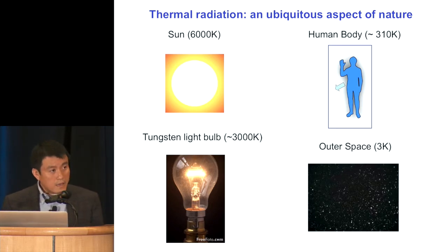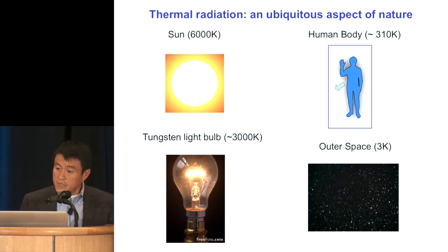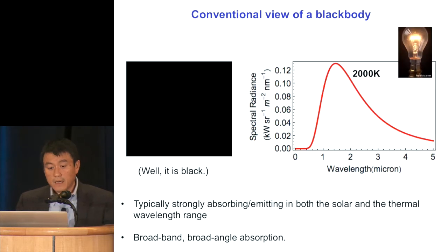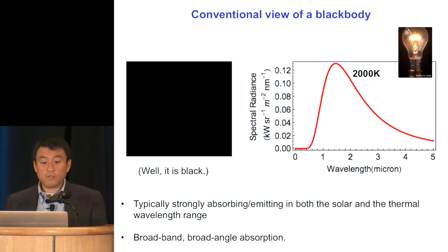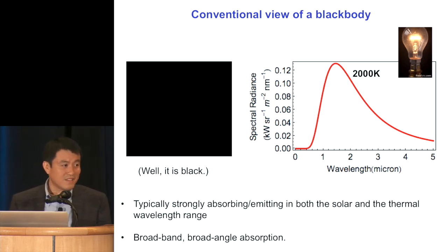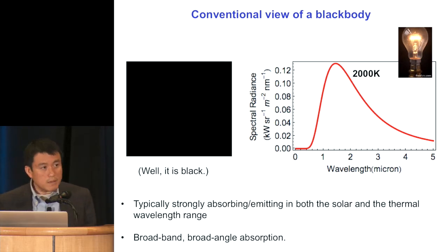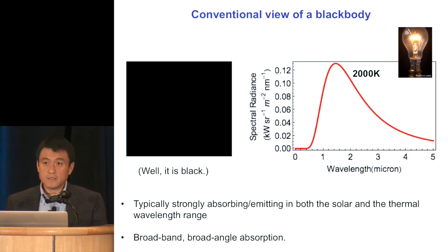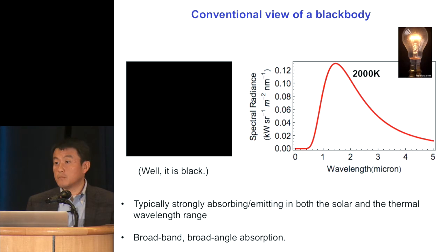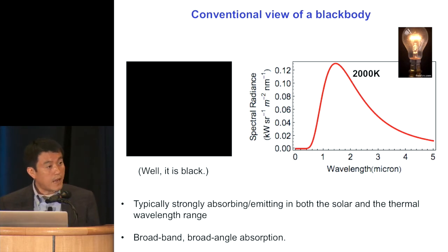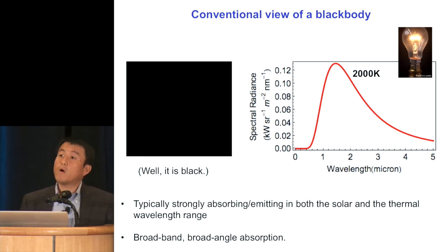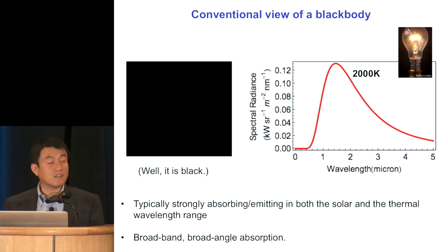If you open any textbook on thermal radiation, they tend to teach you about black body. The conventional view about a black body is that it's black — meaning it absorbs over a very wide range of wavelengths. If you take a carbon black, for example, it absorbs both the infrared and the thermal photon. Consequently, when you heat it up, you have the standard textbook black body radiation, as illustrated by a tungsten light bulb.